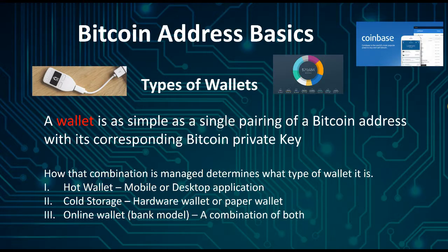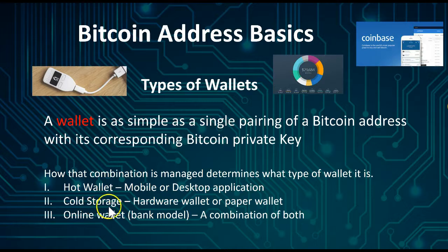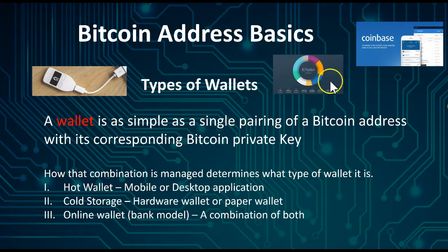How that combination is managed determines what type of wallet it is. We have three types of wallets. There's the Trezor wallet and the Ledger Nano wallet – those are what we call cold storage hardware wallets. A paper wallet is another cold storage option. And then there's a hot wallet, which is a desktop application.